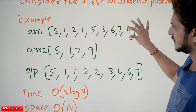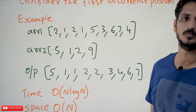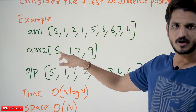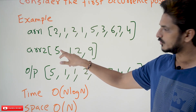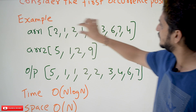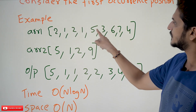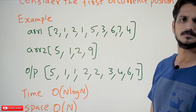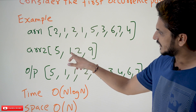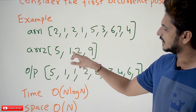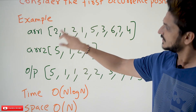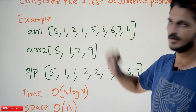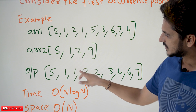In array 2, what's the first element? 5. So our output should contain — is 5 present in array 1? Yes, 5 is present in array 1, so this should become first in the output. What's the next element in array 2? 1. Is 1 present in array 1? Yes, 1 is present in array 1. How many times? 2 times. So the next 2 elements are 1, 1.